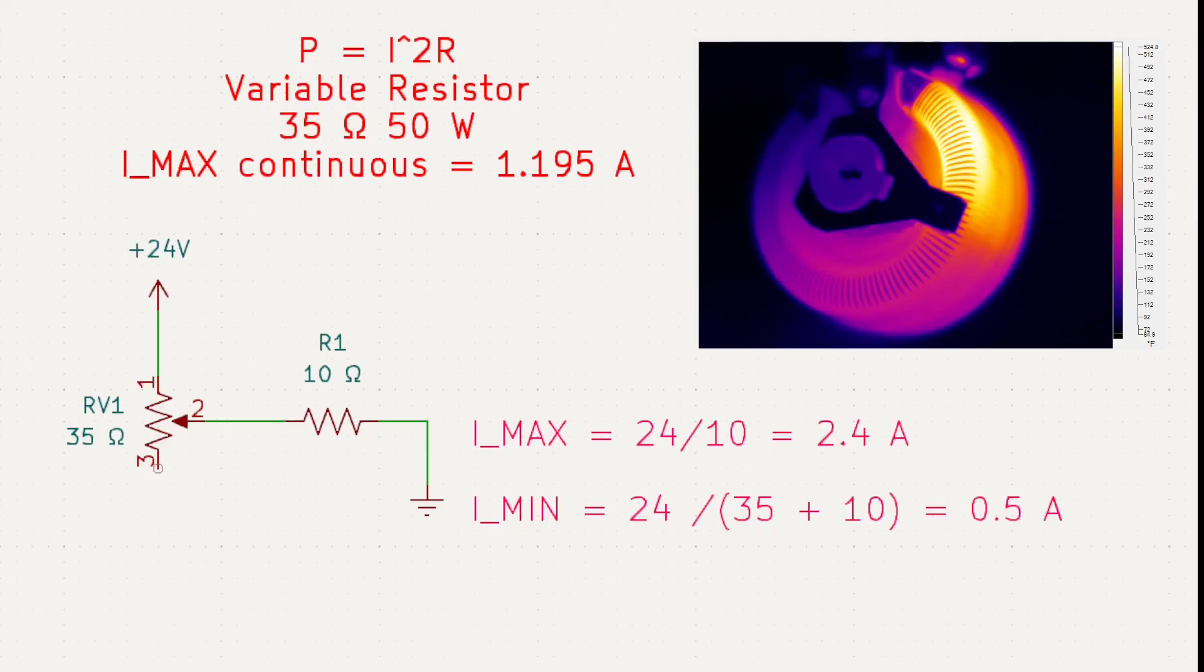And the only way to stay safe is to be mindful of that 1.195 amps continuous current rating. If we stay below that, the resistor should have a long life.